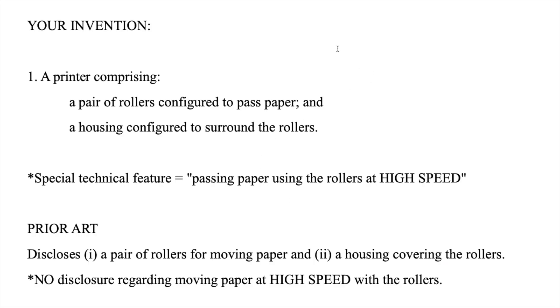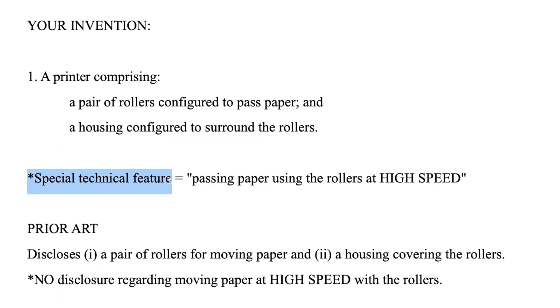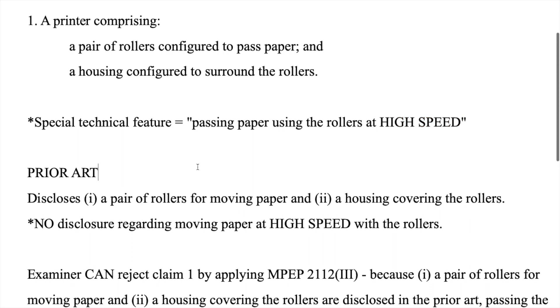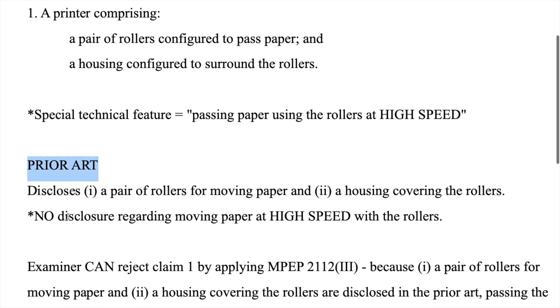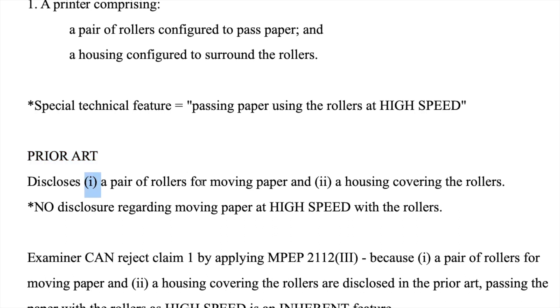Let's do a concrete example. Your invention is a printer comprising two features: a pair of rollers configured to pass paper, and a housing configured to surround the rollers. Your special technical feature is passing paper using the rollers at high speed. Now, the examiner cites some prior art and rejects your claim. The prior art discloses: one, a pair of rollers for moving paper, and two, a housing covering the rollers. However, there is no disclosure regarding moving the paper at high speed with the rollers, meaning the special technical feature is not there.